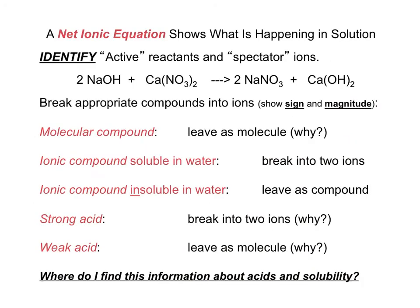A net ionic equation tells us what's happening in solution. Some compounds will break up into ions, and others will not. To write a net ionic equation, we want to be able to classify each compound by its compound type. Stop the video and review these rules.